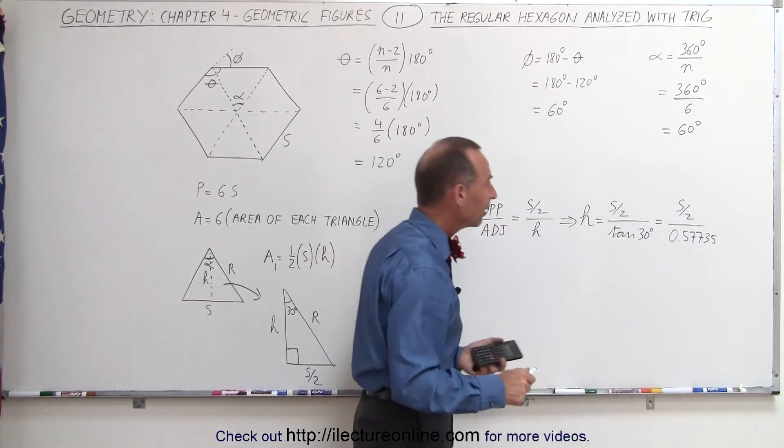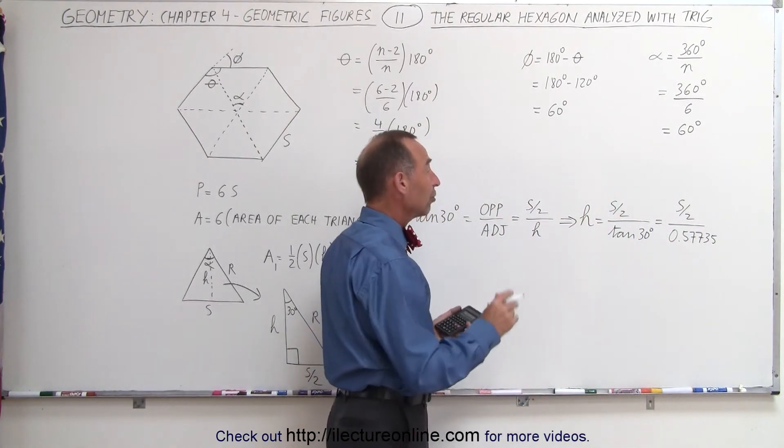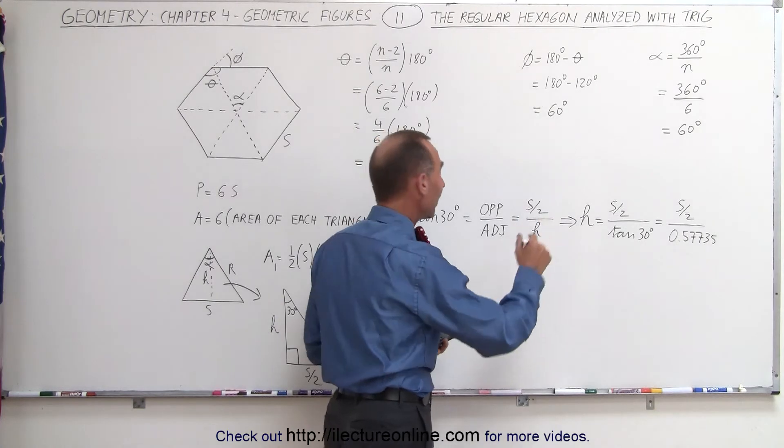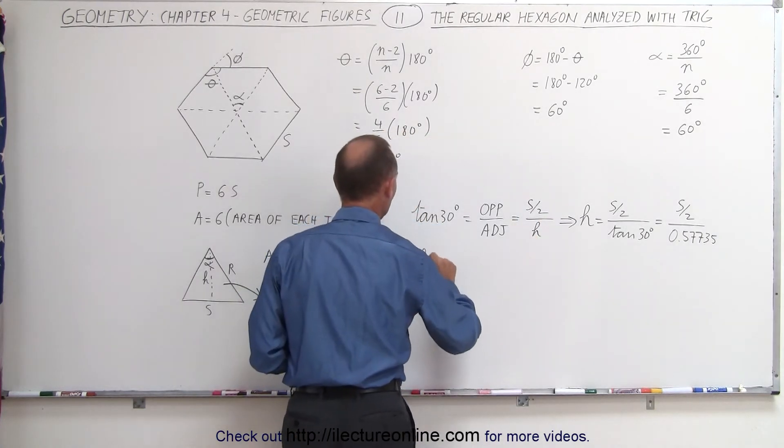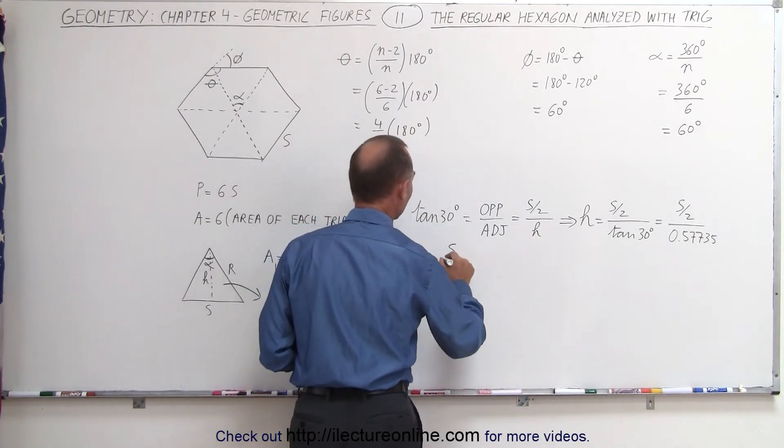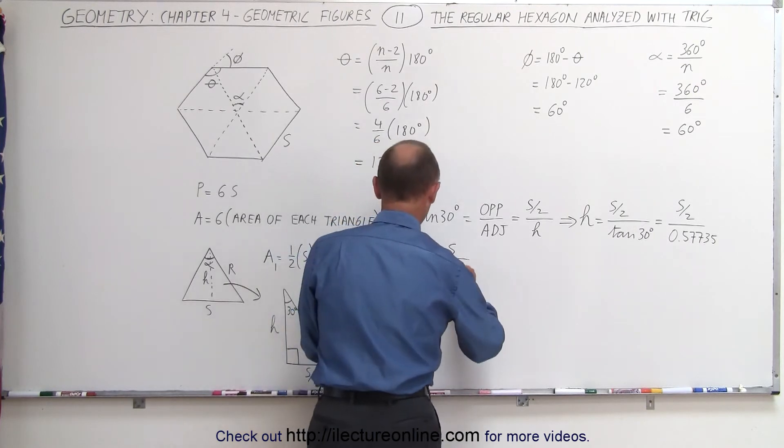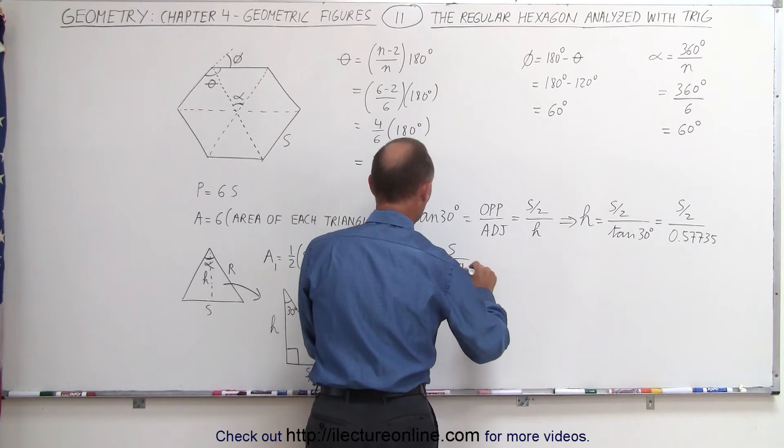This gives us five decimal places of accuracy. Solving for H in terms of S, we get H = S/1.1547.